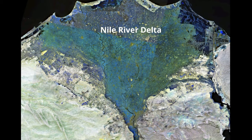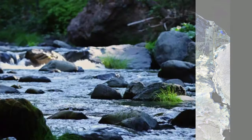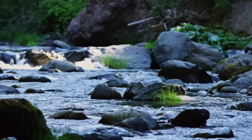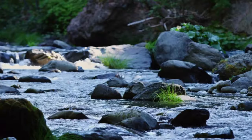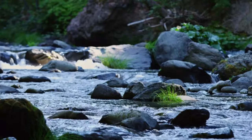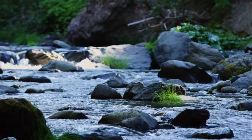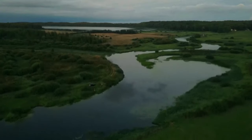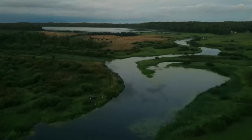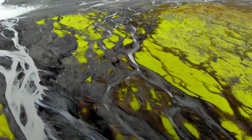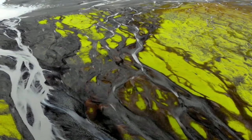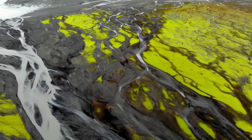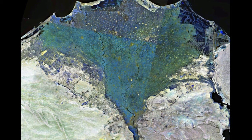In summary, deltas form when rivers pick up sediment caused by weathering and erosion. The river slows down when it enters a body of water, and this may create landforms, and sometimes it may look like a triangle.